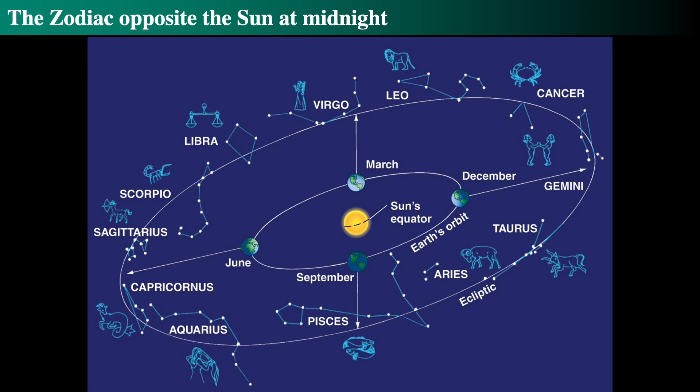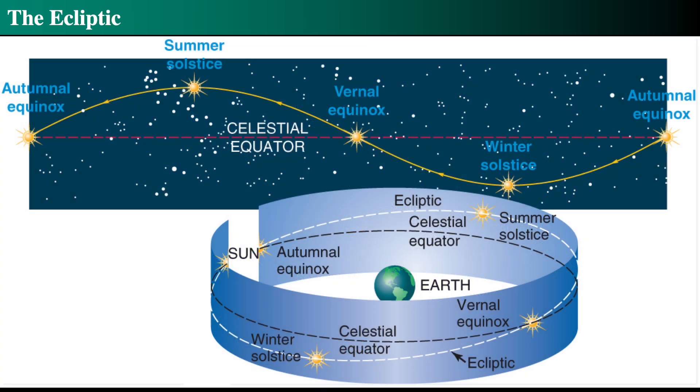This gives rise to what we see as the summer constellations and the winter constellations. Gemini is a winter constellation, Sagittarius is a summer constellation, Pisces is a fall constellation, and Virgo is a spring constellation. This shows the zodiacal positions of the constellations at midnight, though we're not taking into account the difference between the Earth's orbit and its axial tilt in this particular diagram.